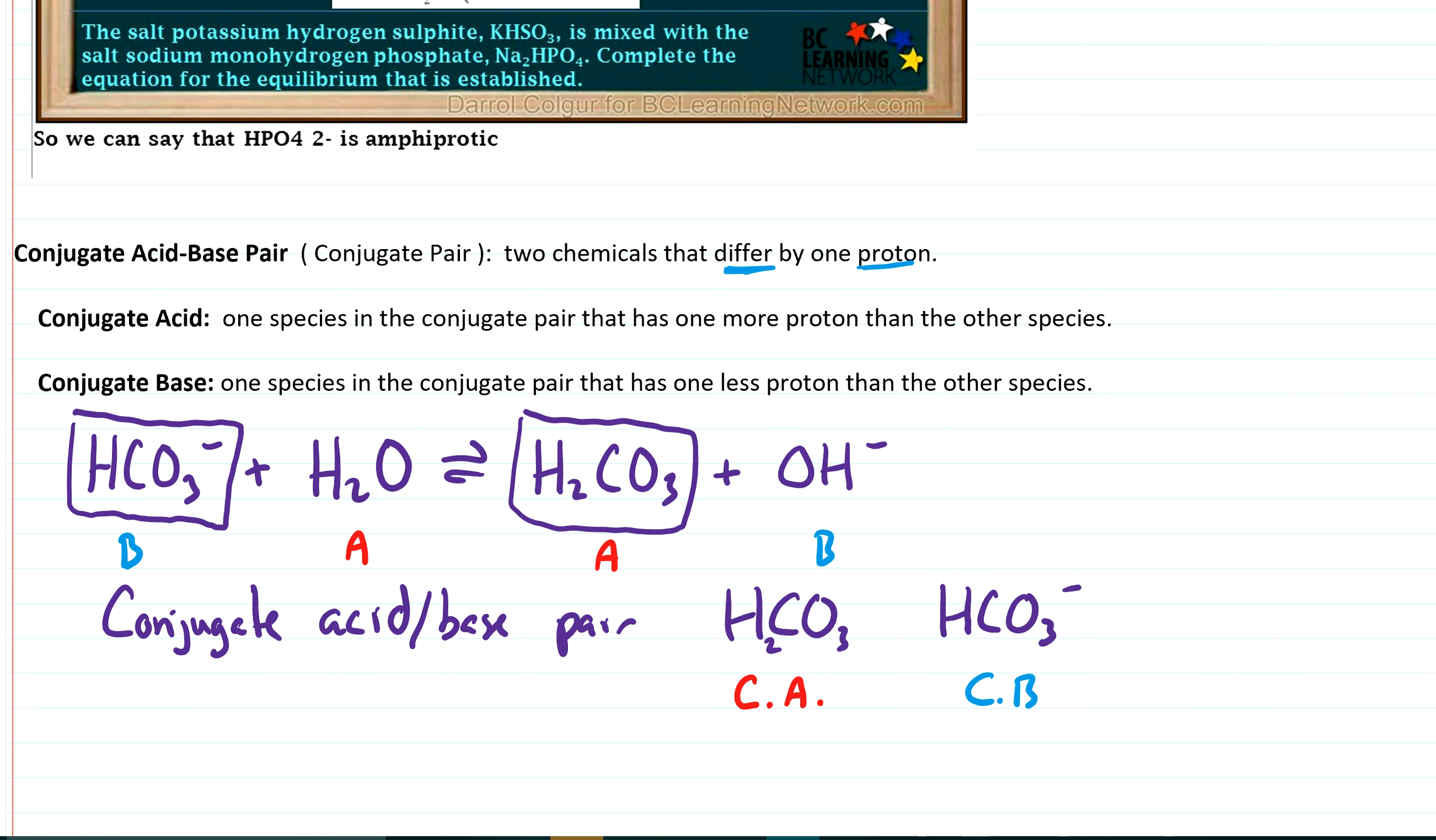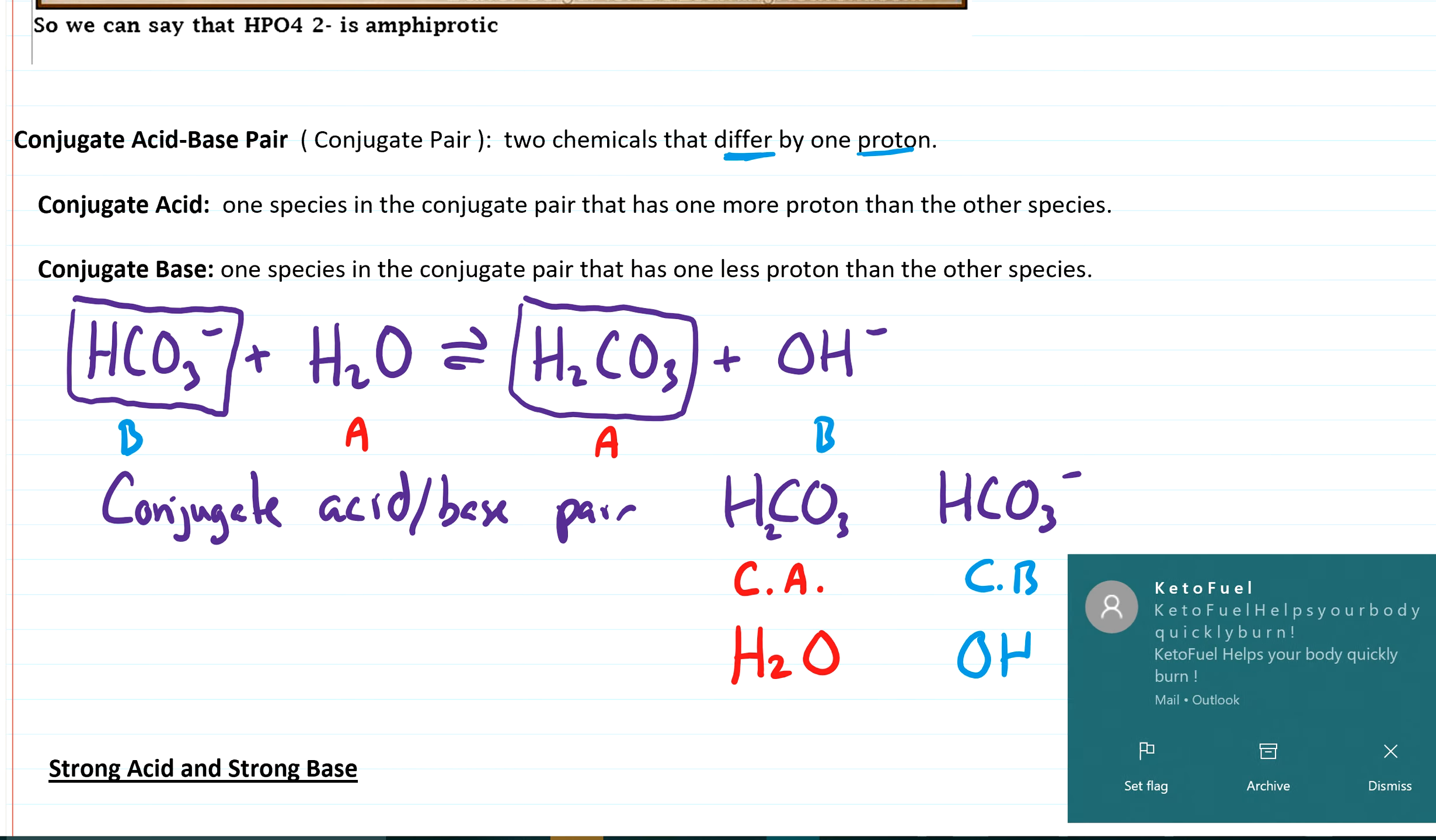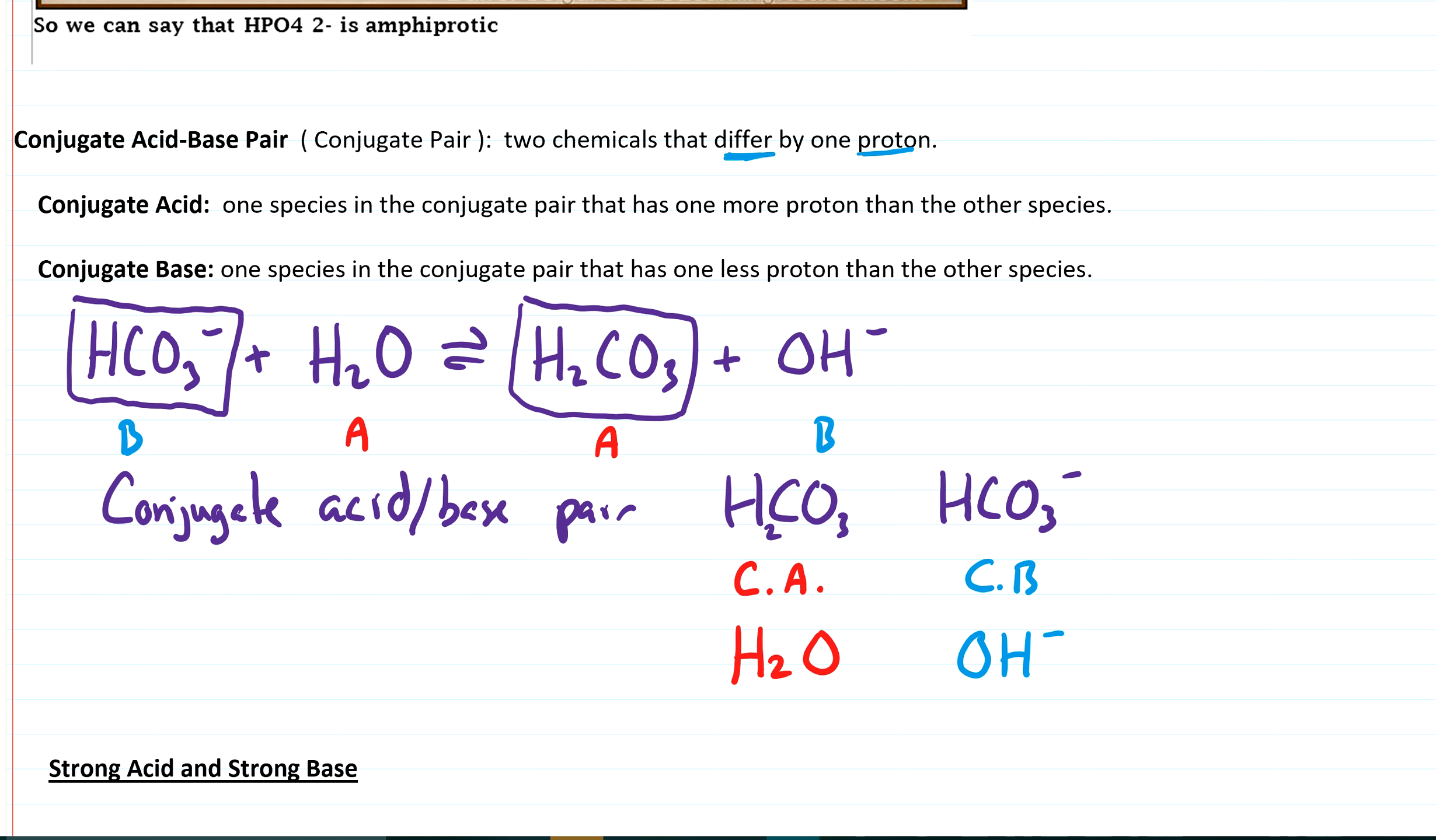So in that pattern, there's another conjugate acid-base pair. And so maybe you could write down what you think the conjugate acid is and what the conjugate base is. So H2O is actually acting as the acid. And its conjugate base, if you take one H away, would be OH-. So H2O and OH-, they would be a conjugate acid-base pair.